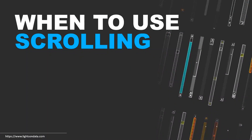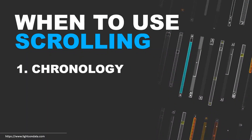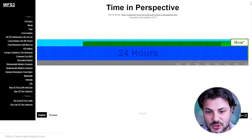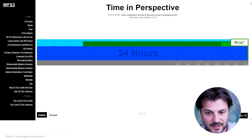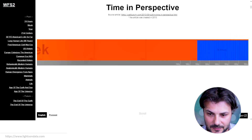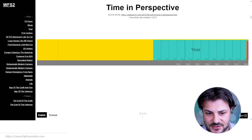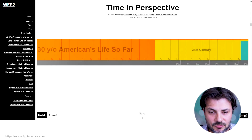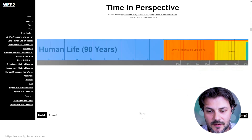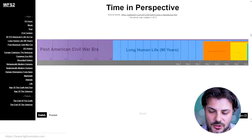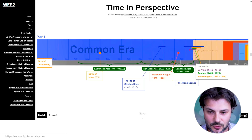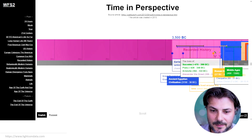So that begs the question: when should we use scrollytelling? It's especially suited for a story with a specific chronology. In one example, time is put in perspective — scroll-triggered animations stretch the timeline, reveal milestones, and show how each era fits into history. It tells a chronological story, and as we keep scrolling, we keep going back in time.